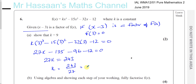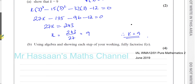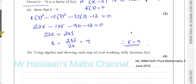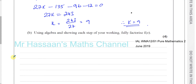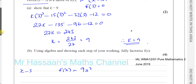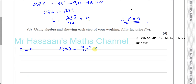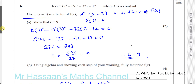k equals 9, so we've shown that k equals 9 because x minus 3 is a factor. That's part A finished. Now for part B: use algebra, ensuring each step of your working, to fully factorize f of x. We know x minus 3 is a factor, and the function is f(x) = 9x cubed minus 15x squared minus 32x minus 12.